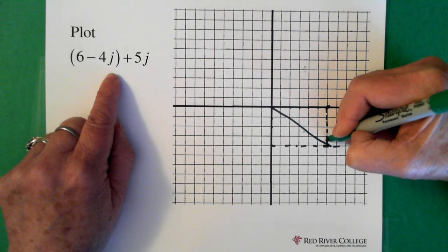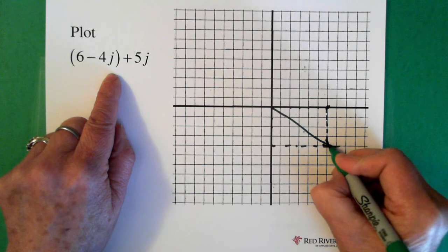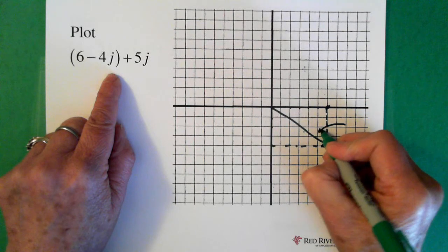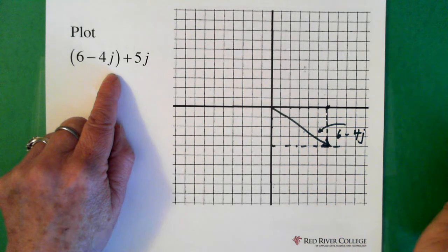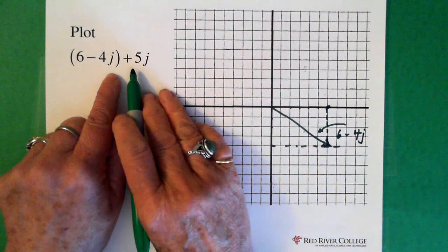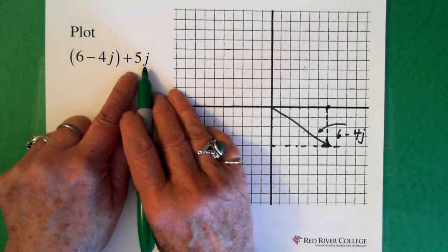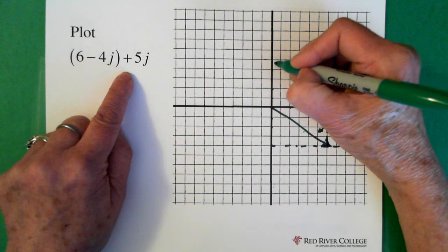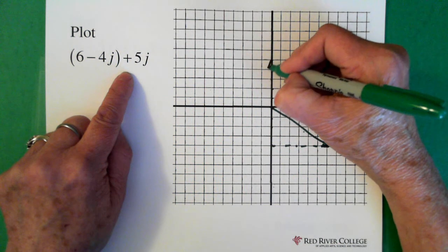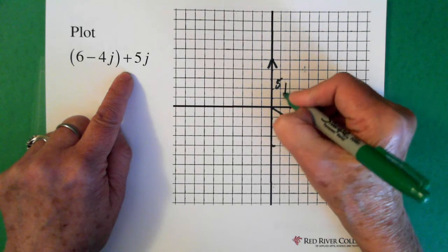So that's our 6 minus 4j. And we're adding it to 5j. Now 5j is on the imaginary axis and it's positive, so we're going up: 1, 2, 3, 4, 5. So right here is our 5j.